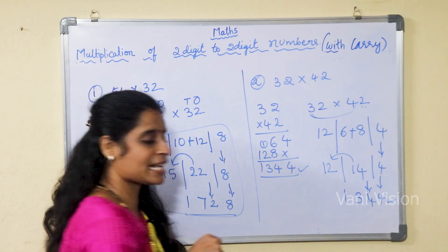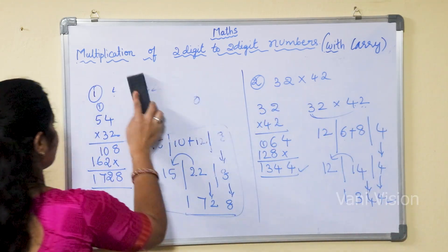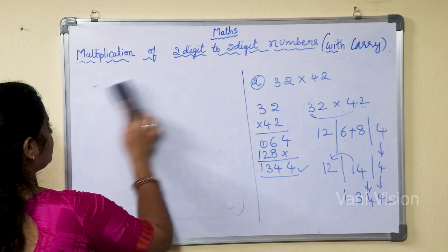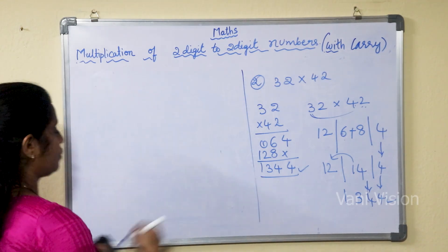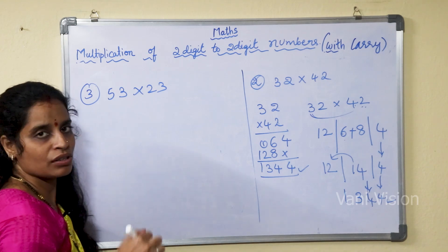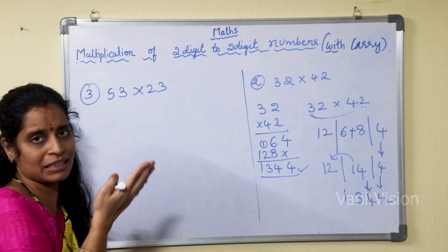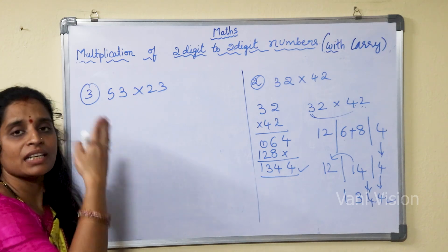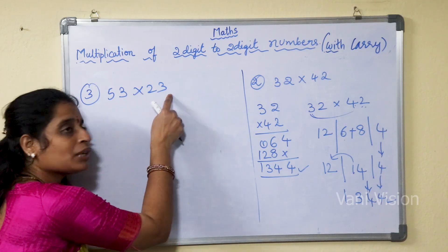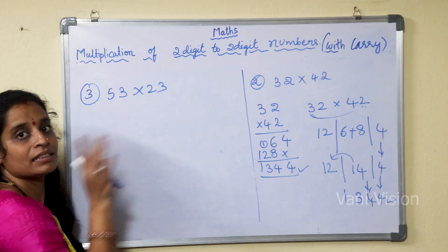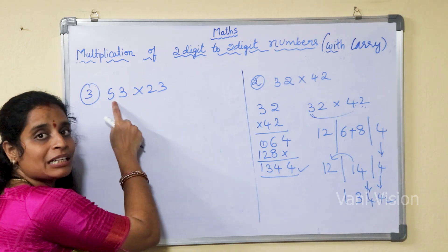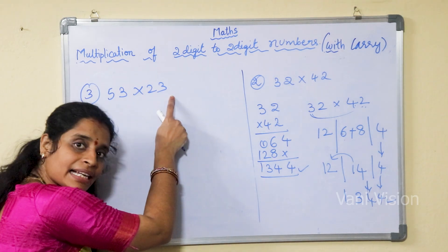So we are going to see our next example. We will take 53 into 23. What is our first step? We have to start multiplying with the first digit: 5 into 2 is 10. And then separate — 5 into 3 is 15. First we are doing the first digit with the two numbers, and next the second digit with the two numbers. The first digit should be multiplied with the first digit and also with the second digit.